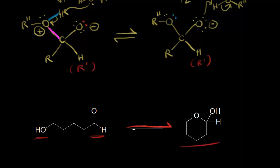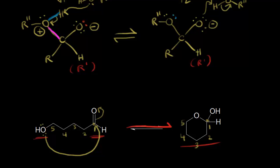We form a cyclic hemiacetal. Let's number our carbons to figure out what happened: carbon one, two, three, four, and five. We know that the alcohol functions as a nucleophile and attacks the carbonyl carbon. This oxygen must be able to swing around and attack the carbonyl carbon, pushing the electrons off onto that oxygen. Following the carbons on the product: carbon one, two, three, four, and five. The oxygen in the ring was the alcohol oxygen, and the formation of cyclic hemiacetals is extremely important in biochemistry and carbohydrate chemistry.